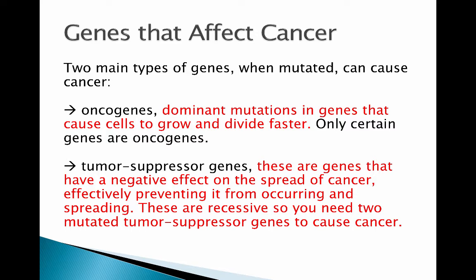Another class of genes involved in cancer are tumor suppressor genes. Their normal purpose is to prevent cancer from happening. They have a negative effect on the spread of cancer. If both copies get knocked out, you no longer have a functional tumor suppressor at that locus and you become unable to suppress the genes that can cause cancer.